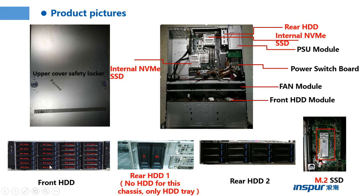This view shows the front hard drive area. We can see it can support up to 24 front hard drive slots: slot 0, slot 1, slot 2, slot 3, and so on. There are two front hard drive backplanes. Those 12 front hard drives are installed on backplane 1, and the other 12 front hard drives are installed on backplane 2.